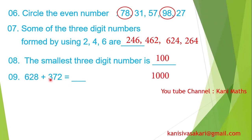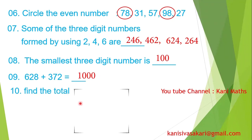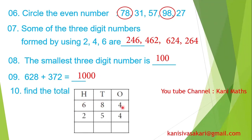628 plus 372: 8 plus 2 is 10, write 0 carry 1; 2 plus 7 plus 1 is 10, write 0 carry 1; 6 plus 3 plus 1 is 10. That is a 4-digit number result of 1000. Now, 254 plus another number: 4 plus 4 is 8 — wait, 8 plus 5 is 13, write 3 carry 1; then 6 plus 1 is 7, 7 plus 2 is 9. Answer is 9.